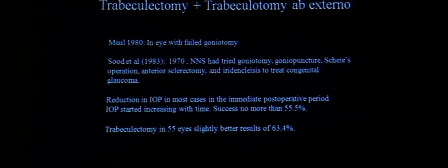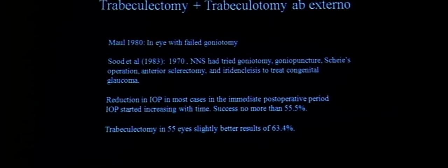Trabeculotomy and trabeculectomy ab externo combined were first described in an eye where goniotomy had failed. The Ahmedabad group since 1970 had tried various surgical procedures and were dissatisfied with outcomes from goniotomy, gonio-puncture, and sheath procedures. They eventually looked at trabeculectomy, and later combined trabeculectomy ab externo with trabeculotomy, raising a triangular flap and cannulating Schlemm's canal with the Harms trabecular tome.